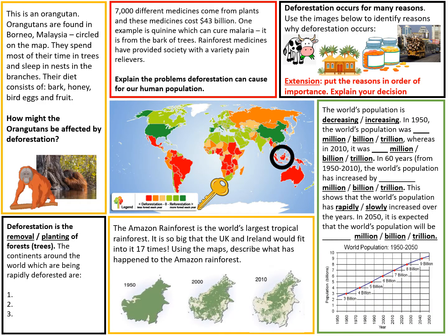What we have here is a map of the world in the middle — a choropleth map, which is using colour to represent areas that are being deforested. We're focused on the red areas. You can see that there is an area that's been circled and this is showing us the location of Malaysia and Borneo.